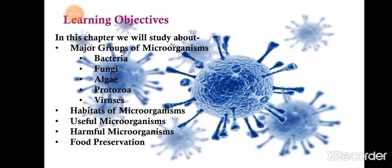In this chapter we will study the five major groups of microorganisms — bacteria, fungi, algae, protozoa, and viruses — then habitats of microorganisms, useful microorganisms, harmful microorganisms, and food preservation. The topics of harmful microorganisms and food preservation will be covered in the second part.